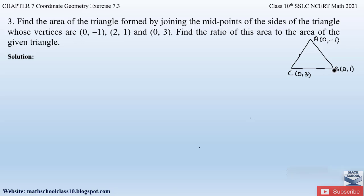Let us assume the mid point of side BC to be P, the mid point of AB to be Q, and the mid point of side AC to be R. By joining these mid points we obtain triangle PQR. We have to find the area of triangle PQR — that is what is asked in the first part. Then we also have to find the ratio of this area to the area of triangle ABC.